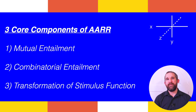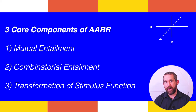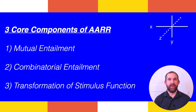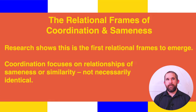To review: there are two basic types of relational responding — non-arbitrary and arbitrarily applicable relational responding. Relational responding has three core components: mutual entailment, combinatorial entailment, and transformation of stimulus function. In the final section, we're going to look at the types of relational frames and how they influence language and cognition.